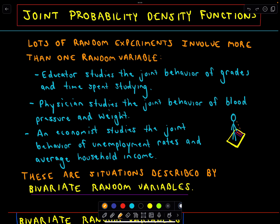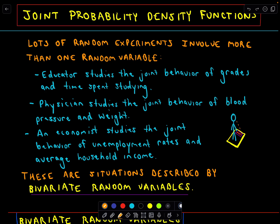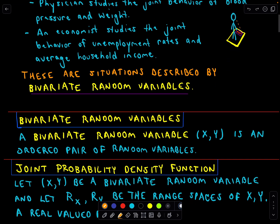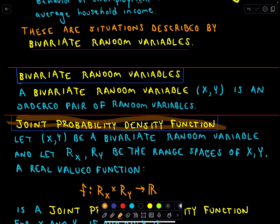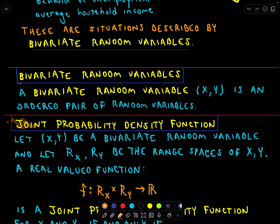These are situations that can be described by bivariate random variables. My examples are mostly going to deal with discrete random variables, but it will also apply to continuous random variables. A bivariate random variable is just an ordered pair XY of random variables. When we have these bivariate random variables, how do we go about producing these density functions? We'll look at two examples.